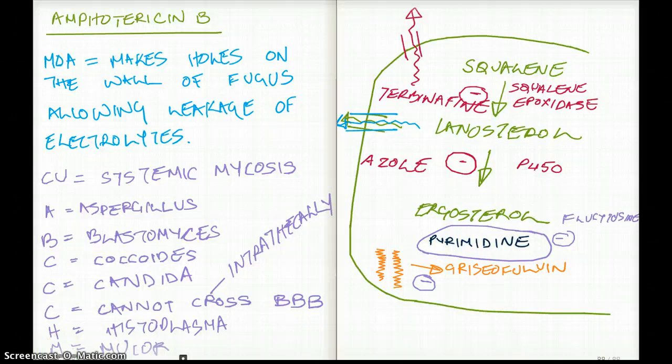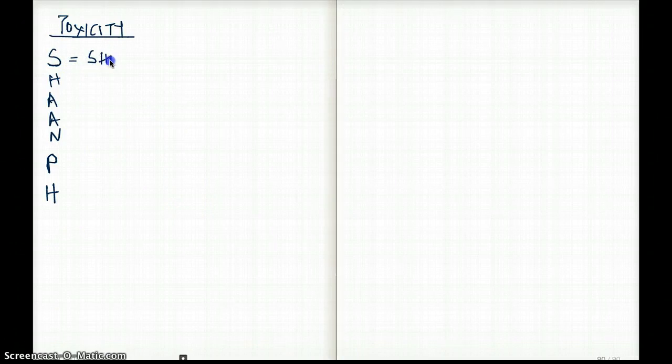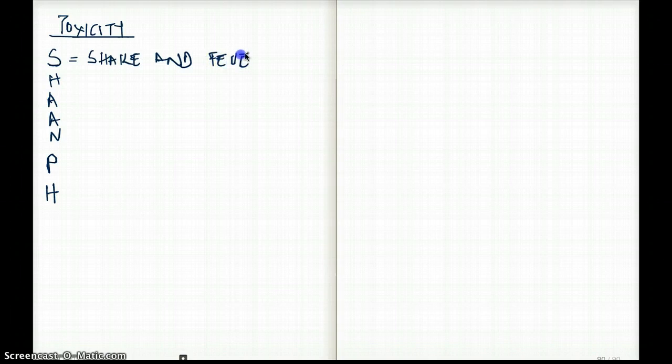Now, let's talk about the toxicity. Now, I have my own mnemonic that I came up with for the toxicity of Amphotericin B. You can come up with your own too. But, this is mine, so I'm sharing mine. My mnemonic is Shaan, S-H-A-A-N, Shaan, Poked Hole. Which makes sense to me because Amphotericin B pokes holes. So, Shaan poked hole. And, what are each of the letters stand for? So, S stands for shake and bake. The whole is shake and fever and chills. So, that's for S. H is going to be for hypotension.